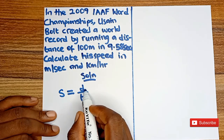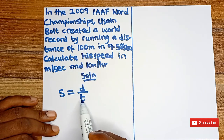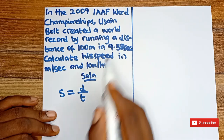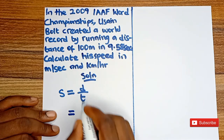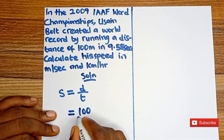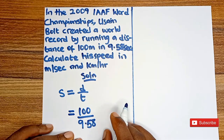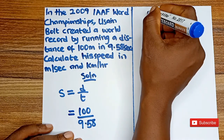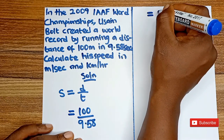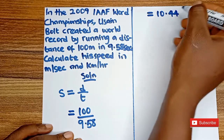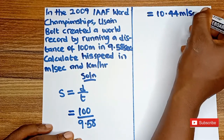So wherever I see distance we put 100 and wherever I see time we put 9.58. So we have 100 divided by 9.58. When you divide 100 by 9.58 your answer will be equal to 10.44 meters per second.